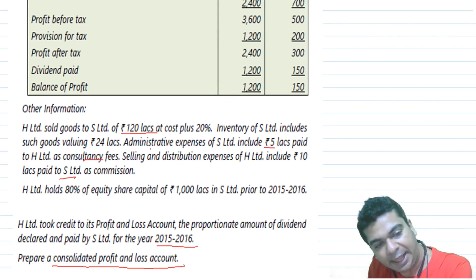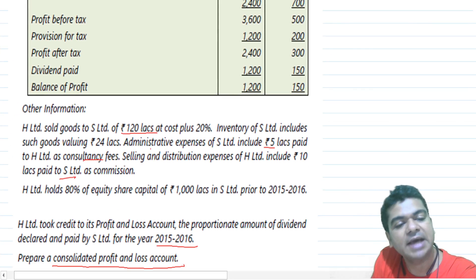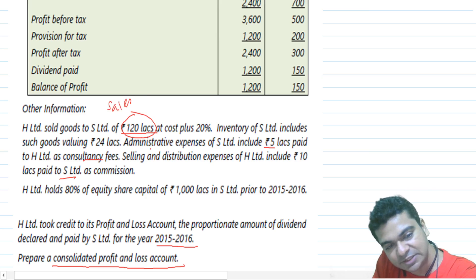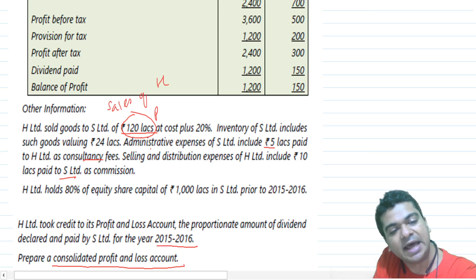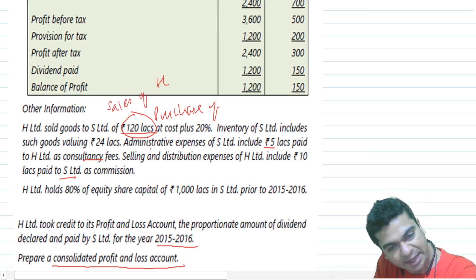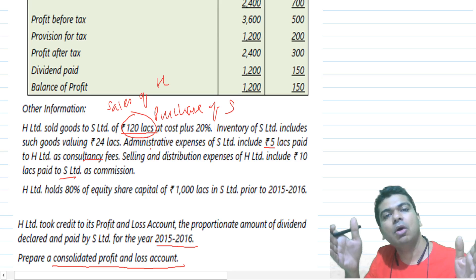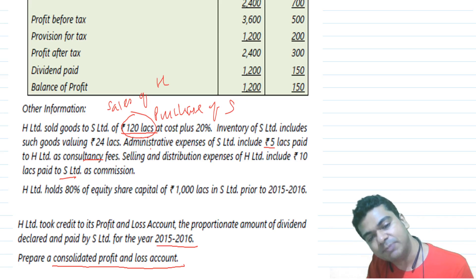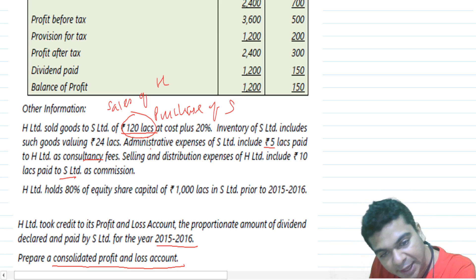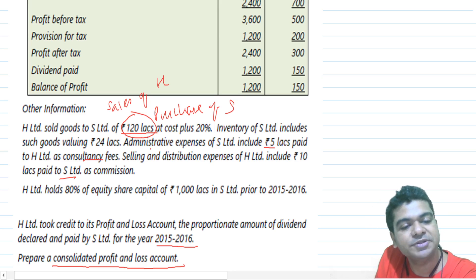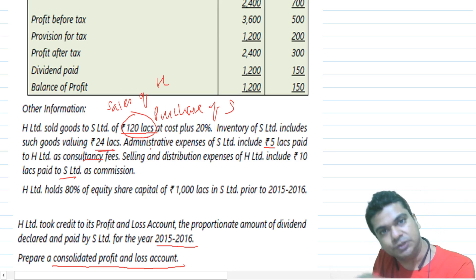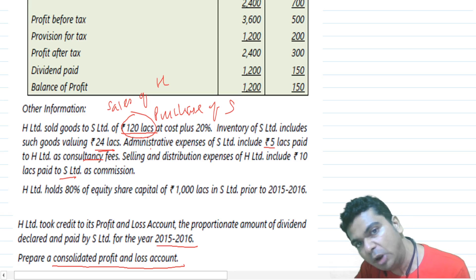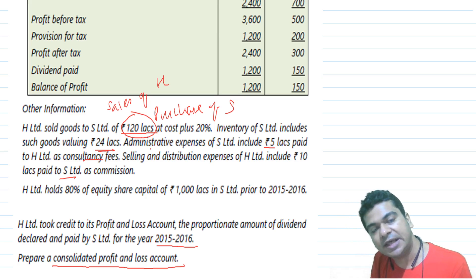The first intercompany transaction: H Limited sold goods of rupees 120 lakhs. This must be lying in sales of H and in purchases of S. So when you are preparing the consolidated P&L, reduce the sales by 120 and reduce your purchases by 120. Next, inventory of S Limited includes goods valuing rupees 24 lakhs — this will give rise to unrealized profit, which needs to be eliminated.